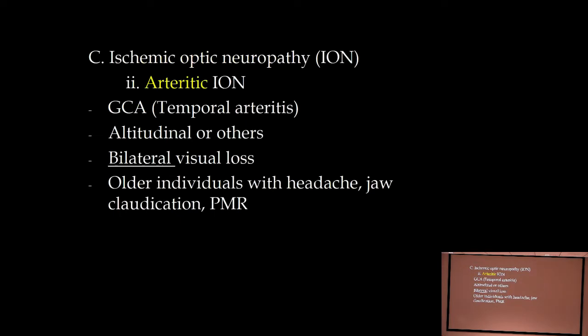The arteritic form is giant cell arteritis (temporal arteritis) — a vasculitis with systemic features. These patients have polymyalgia rheumatica with diffuse achy pains, and it occurs almost exclusively in older individuals. They can have a variety of visual field loss — sometimes altitudinal — along with jaw claudication and polymyalgia rheumatica. The big risk is they can go blind in both eyes. If you have an older individual acutely losing vision in both eyes, giant cell arteritis is most likely your diagnosis.